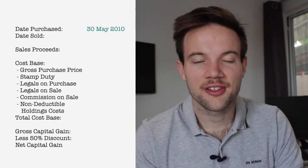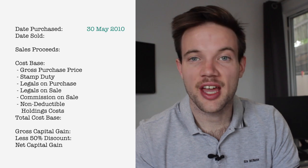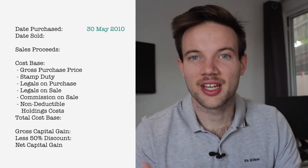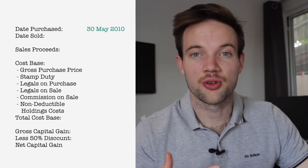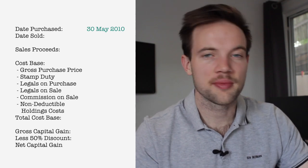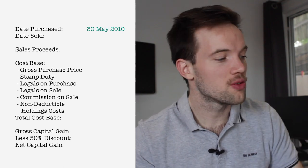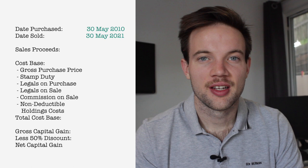Next on the calculator is the date sold. Grab your sale settlement statement and look at the settlement date — in our example that's the 30th of May 2021. We'll enter that in as well.